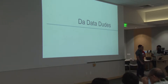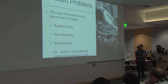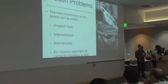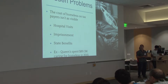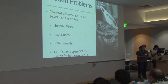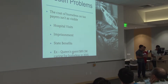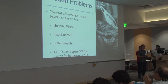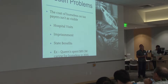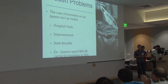So we're going to talk about the problem that we decided to try and solve for this hackathon, which is the homelessness issue. Obviously you see homeless people out on the streets and that presents an issue in itself, but one thing a lot of people don't take into consideration are the hidden problems, one of which is the burden on the taxpayer. Between hospital visits, imprisonment, and state benefits given to those individuals, there's a huge financial drain on the state economy. For example, Queens spent almost 90 million in 2015 alone just on servicing and caring for homeless people.